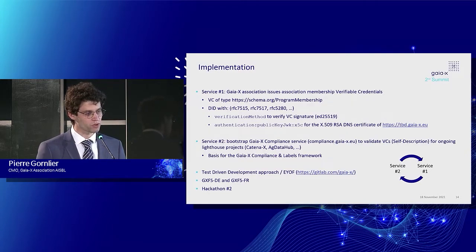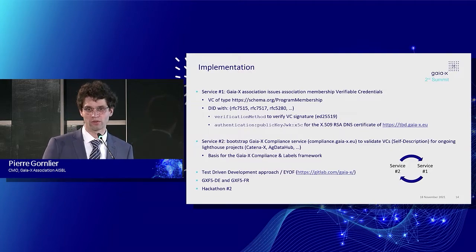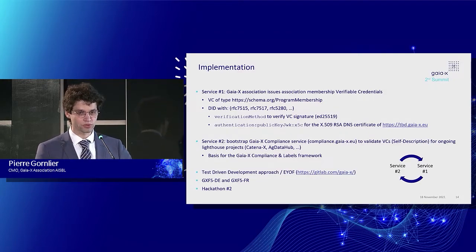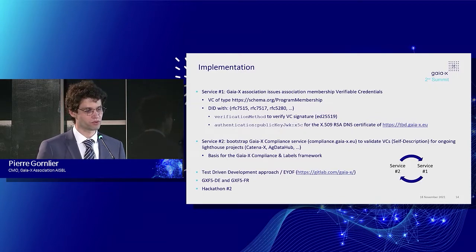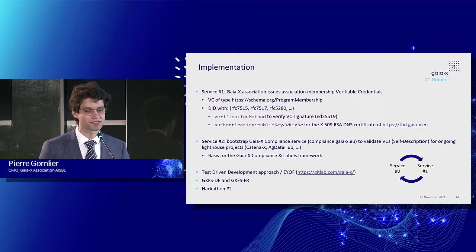The second service we work on is the bootstrapping of the GaiaX compliance. That's a critical part of the services we must have to enable all the Lighthouse projects that have been mentioned. This GaiaX compliance service takes as input the output of the first one, and provides feedback, control, implementation, and improvement back into the first one — very classical test-driven development. The source code is stored on the GitLab of the association, where everything is already public in read-access mode, and welcome to everyone in read-write-access mode under request.